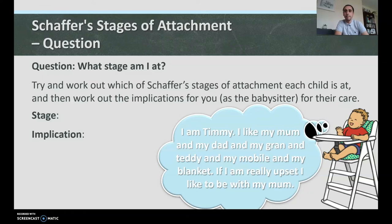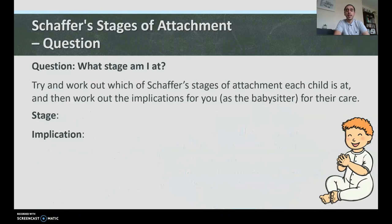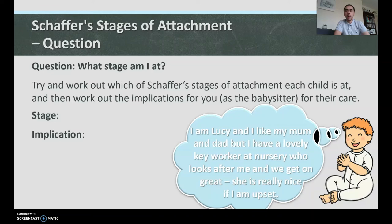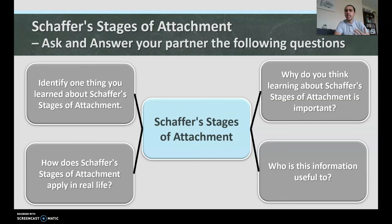Timmy: 'I like my mum and my dad and my gran and teddy and my mobile and my blanket.' That's actually the asocial stage — he likes inanimate objects like teddy and his mobile too, so he doesn't show a preference for animate over inanimate objects. Best baby to babysit: as long as they're fed and dry they'll happily gaze at you, a box, or a teddy. Lucy: 'I like my mum and dad and have a lovely key worker at nursery.' That's the multiple attachment stage — she's formed attachments to a number of people; the more you babysit the easier it becomes.